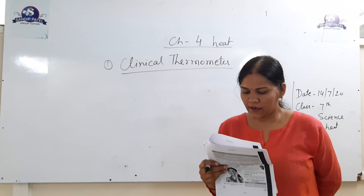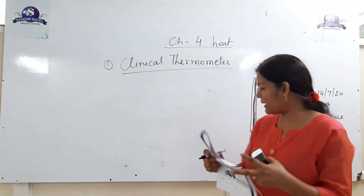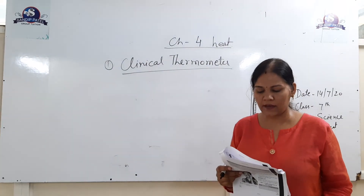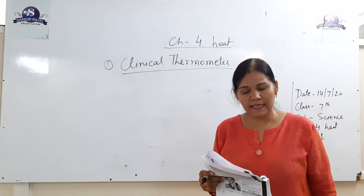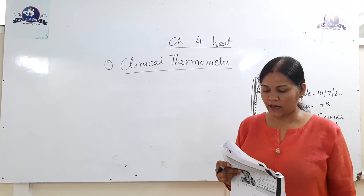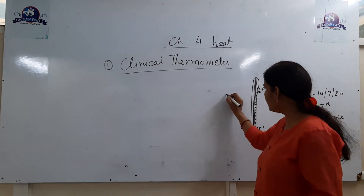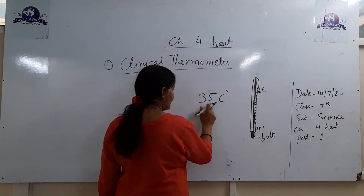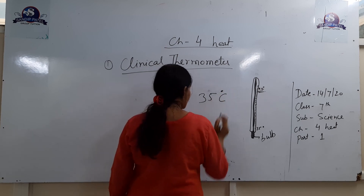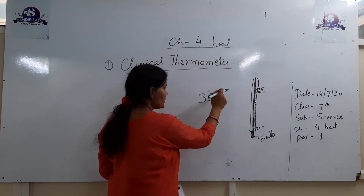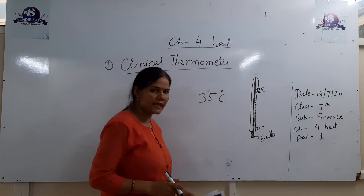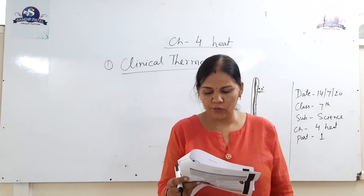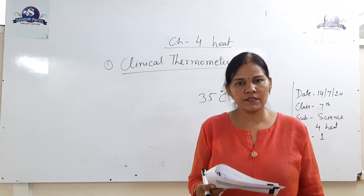You will also find a scale on the thermometer. The range is 35 degrees Celsius, and the unit of the scale is Celsius. This indicates degrees Celsius — written as °C. For a clinical thermometer, the temperature range is from 35 degrees Celsius to 42 degrees Celsius.